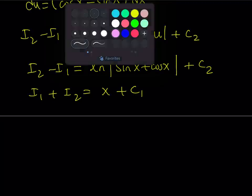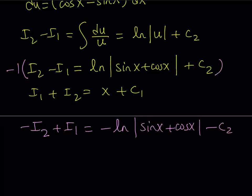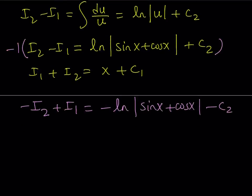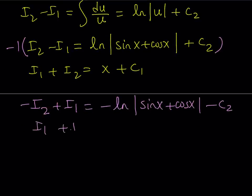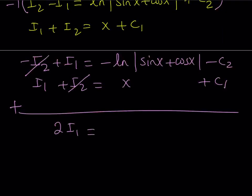So since I'm trying to solve for I1, I would like to negate the first equation. So let me go ahead and do that. I'm going to multiply the first one by negative 1. And that's going to give me negative I2 plus I1 is equal to negative ln absolute value of sine x plus cosine x minus c2. c2 is a constant, so if you want to call negative c2, c3, that's fine. We're going to do it at the end. So now I have I1 plus I2 as x plus c1. So now I can go ahead and add these two equations because that's going to eliminate I2 and I'm going to end up with I1.